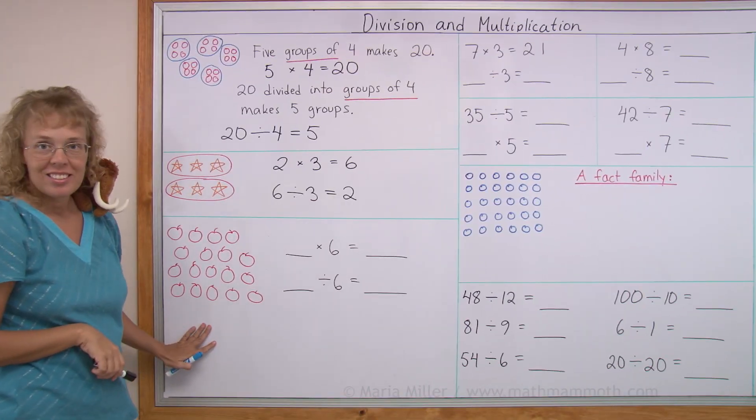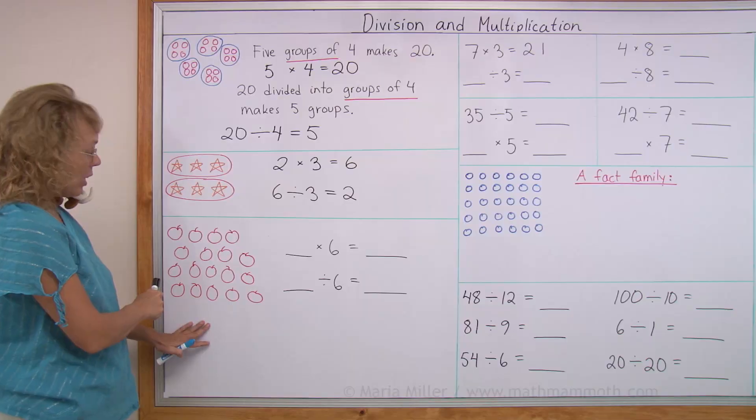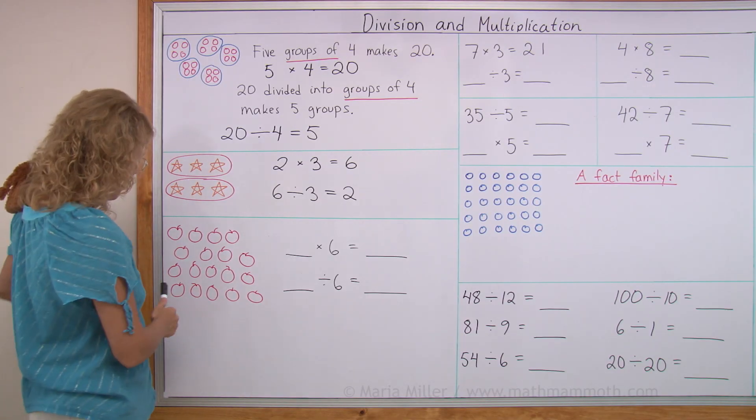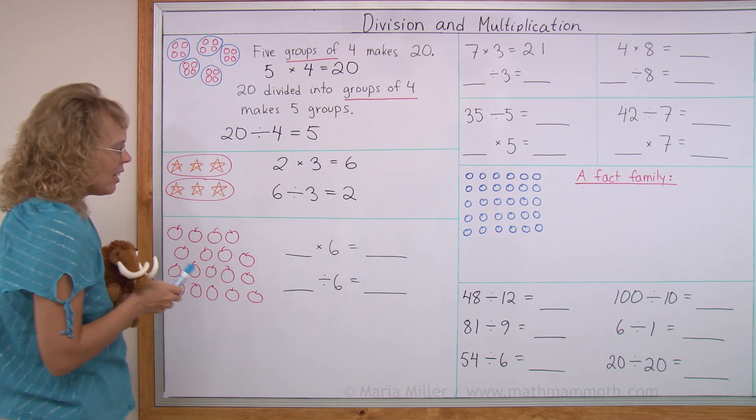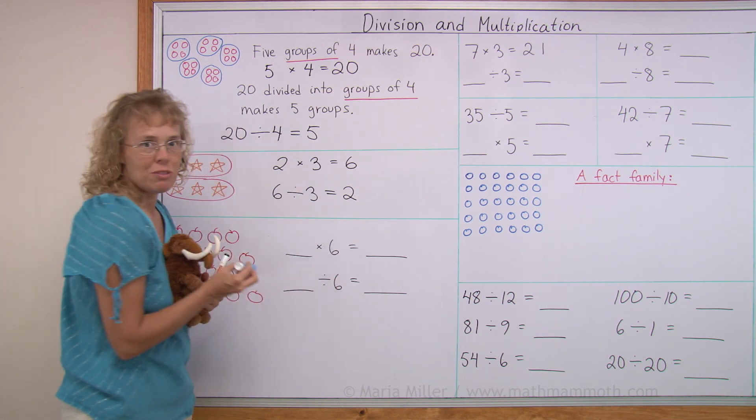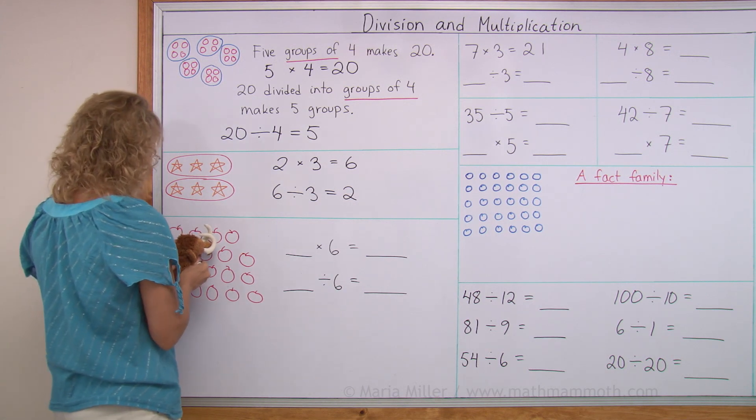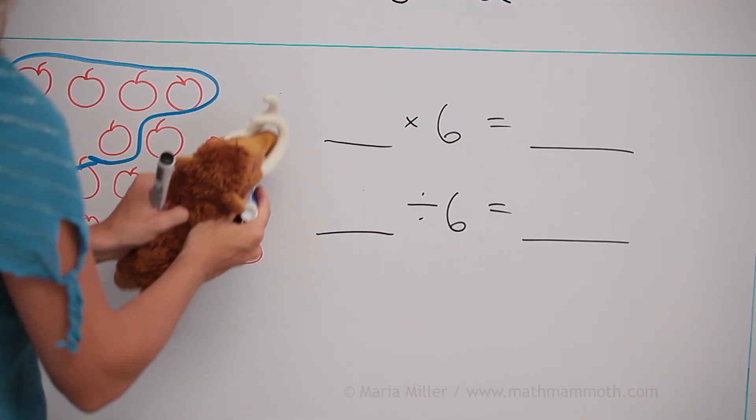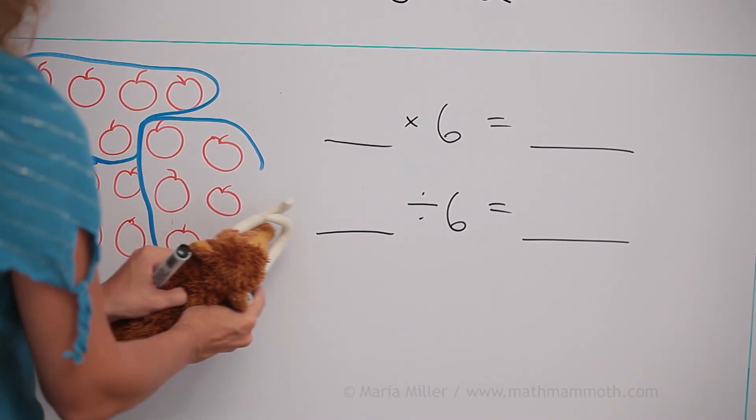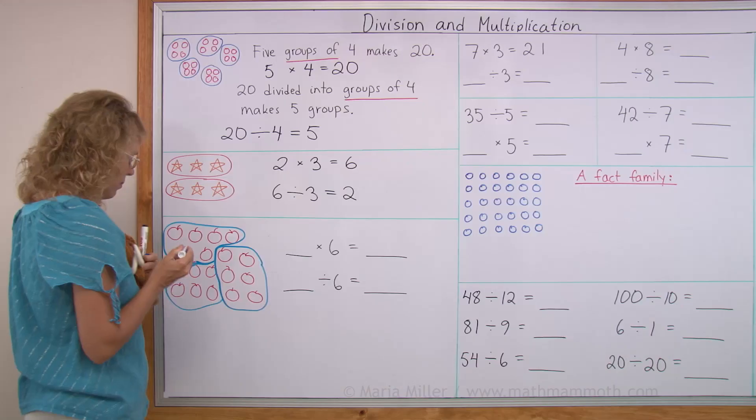How about here? Can you write the multiplication and the division for this picture? And we also need to make the groups. They are not made. Matthew is ready for the task. This tells us we need to make groups of six. Okay, yep, that's six. Good job, Matthew.